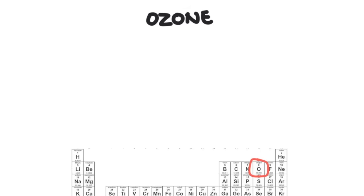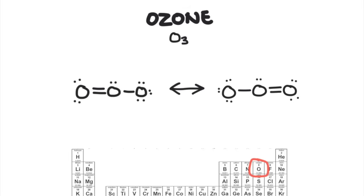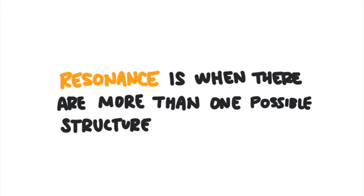One last example: ozone has the chemical formula O₃. Here's what the structural formula looks like. This is only one way to draw it, but there is another way — we could draw it like this. It looks like the same molecule just flipped around, but in fact these are different structural formulas. The oxygen atoms haven't moved; only the bonds moved. So these two structures are completely equal and completely possible. This is called resonance — when there are more than one way to represent a Lewis structure of a chemical compound without moving the atoms around. Both are possible, and so both will exist in nature.